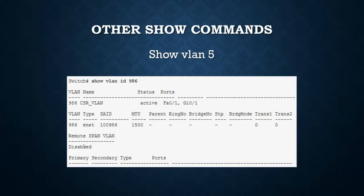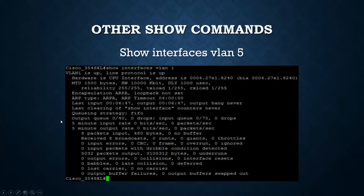Some other show commands: you can show each individual VLAN with 'show vlan id [number]' - for example, 'show vlan id 986.' You can also use 'show interfaces vlan 5' to show the actual virtual interface - for example, showing that VLAN 1 is up.